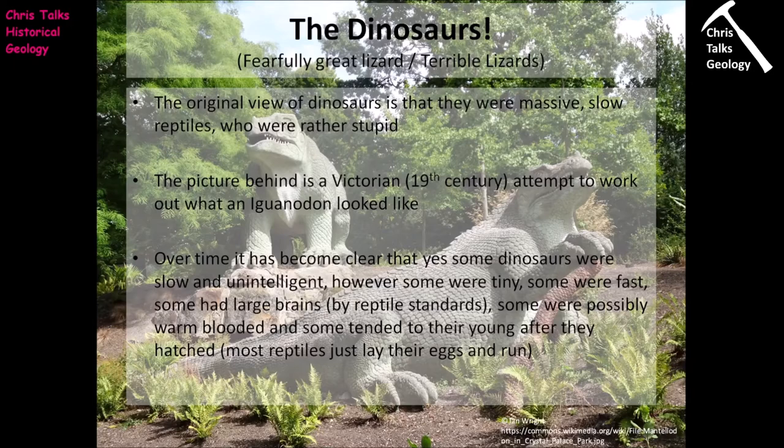That Crystal Palace dinosaur garden shows how the view of dinosaurs has changed — from massive, slow, unintelligent reptiles to, in some cases, very fast and very intelligent ones. Over time it has become clear that while some dinosaurs were slow and unintelligent, some were tiny, some were fast, some had very large brains by reptile standards, some were possibly warm-blooded, and some tended to their young after they hatched — unlike most reptiles, which simply lay eggs and walk away.